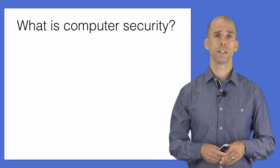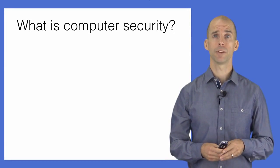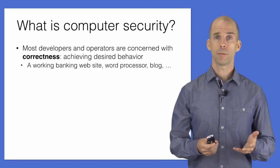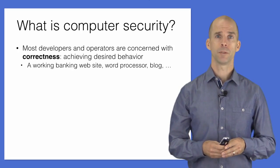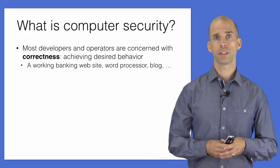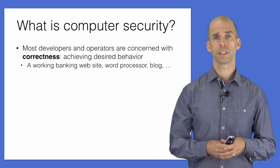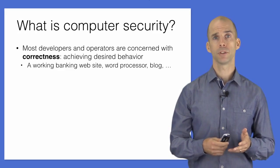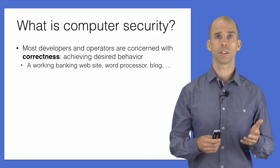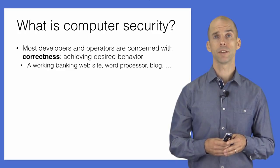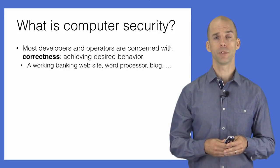Computer security, more recently known as cyber security, is an attribute of a computer system. The primary attribute that system builders focus on is correctness — they want their systems to behave as specified under expected circumstances. For example, when developing a banking website, if a client specifies a funds transfer of $100, then $100 is indeed transferred if the funds are available.